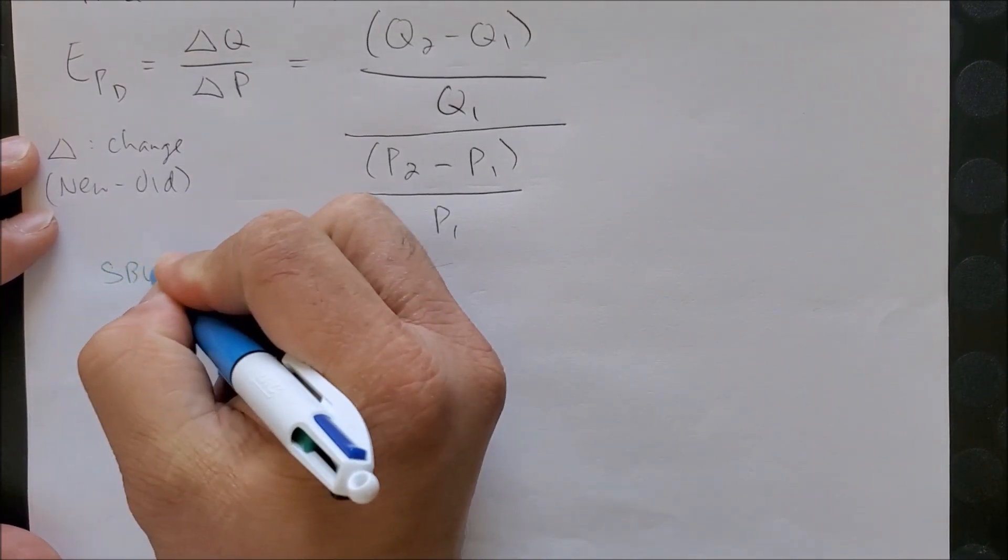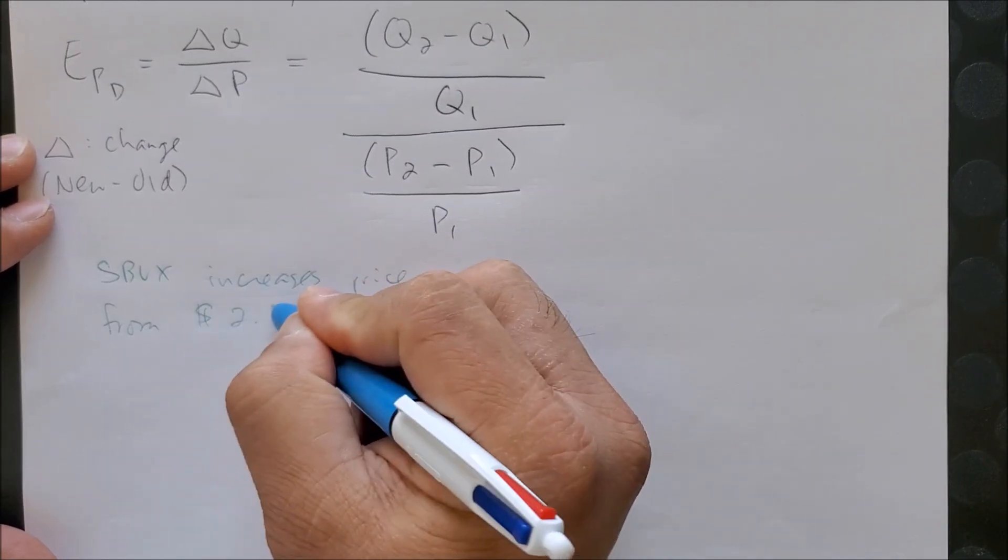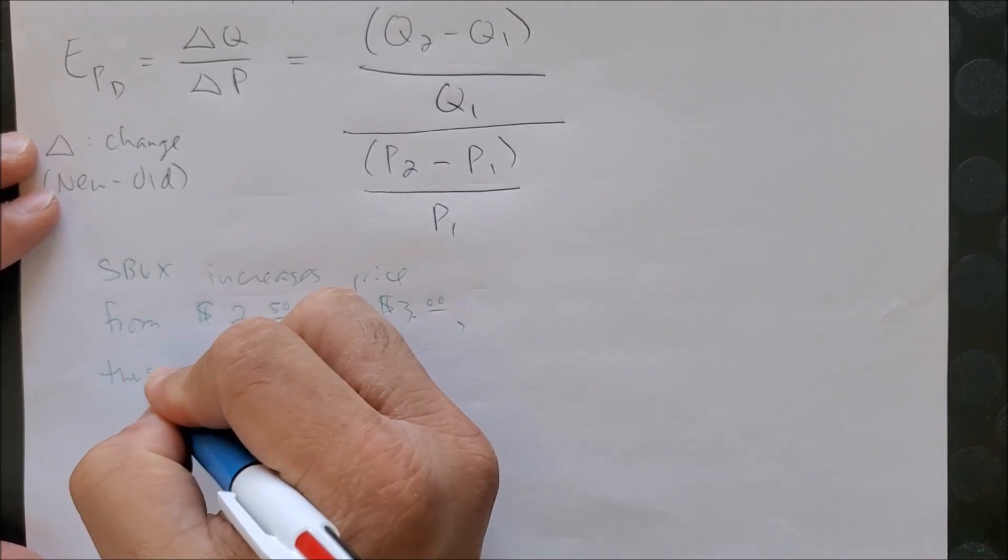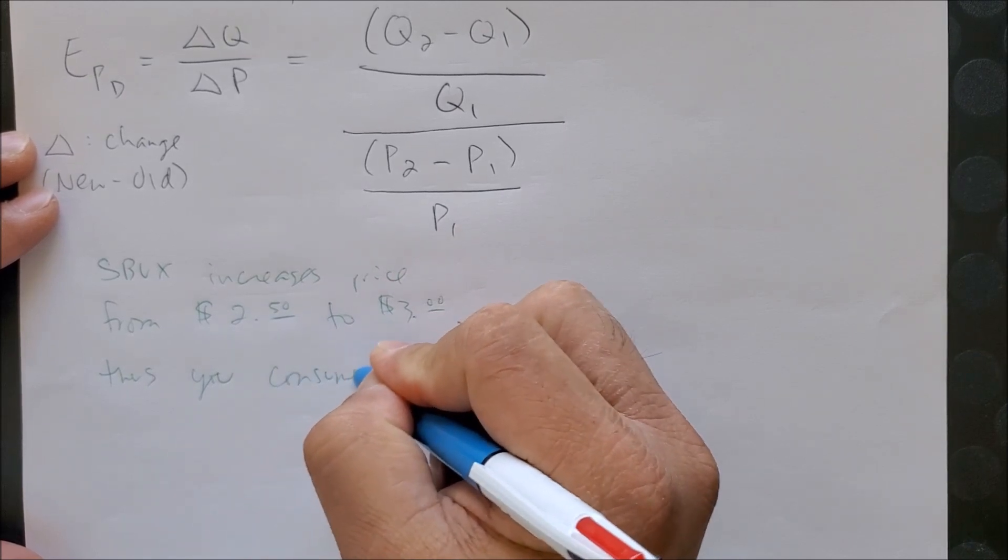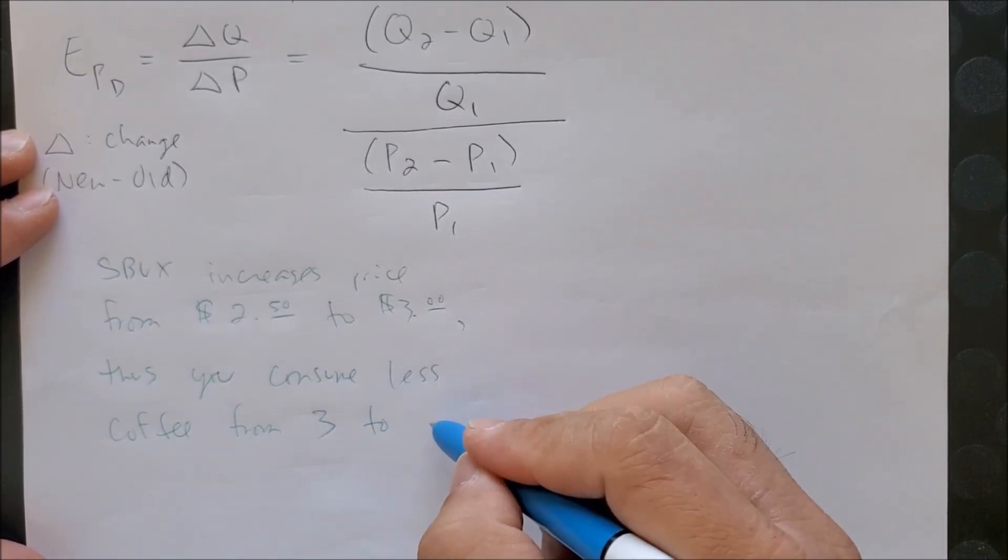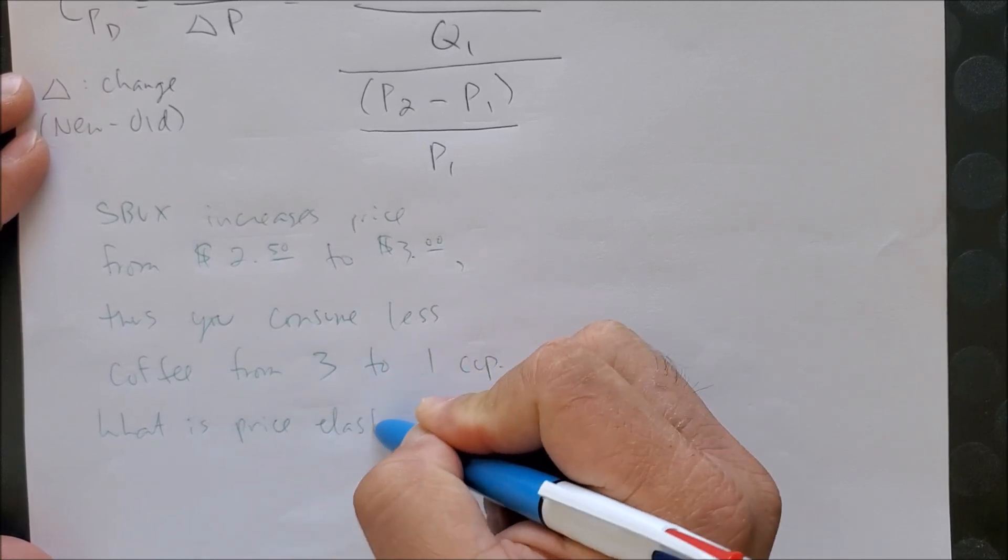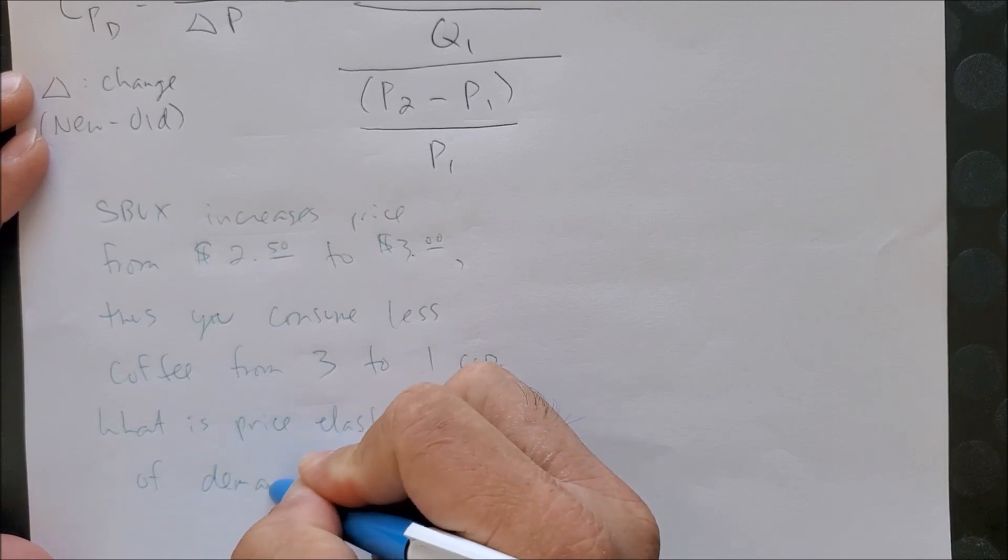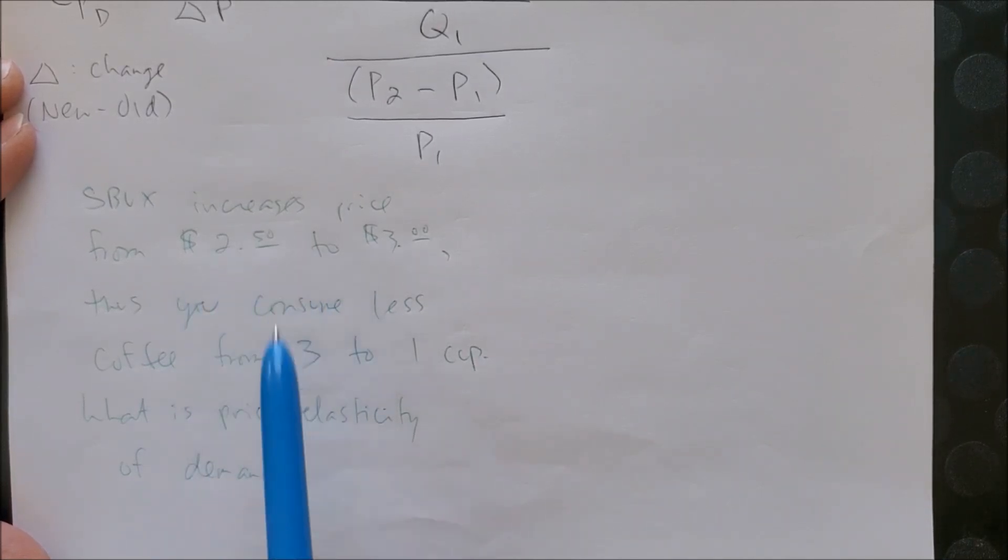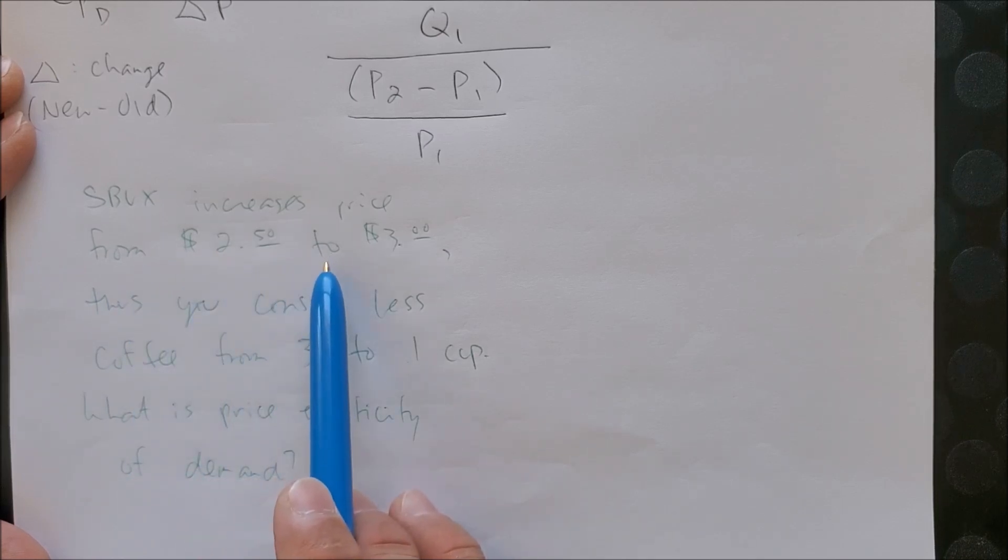For example, back to Starbucks, Starbucks increases price from $2.50 to $3.00. Thus, you consume less coffee from 3 to 1 cup. What is the price elasticity of demand? Notice that now we have two sets of numbers. One set represents price, another set represents quantity. And now you see the word from, from means old, to means new.